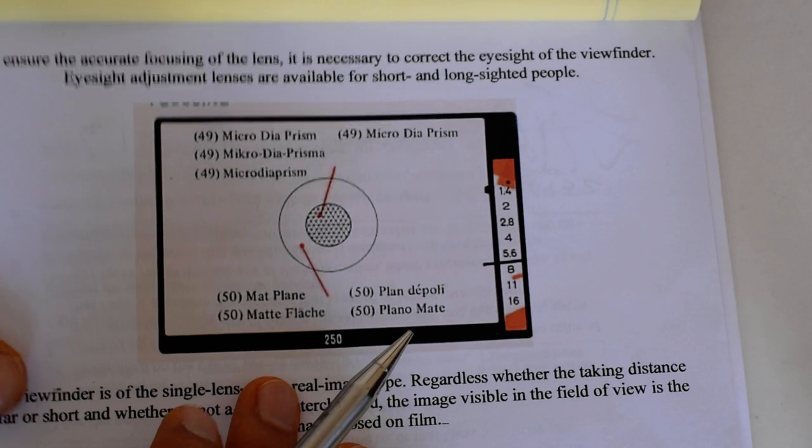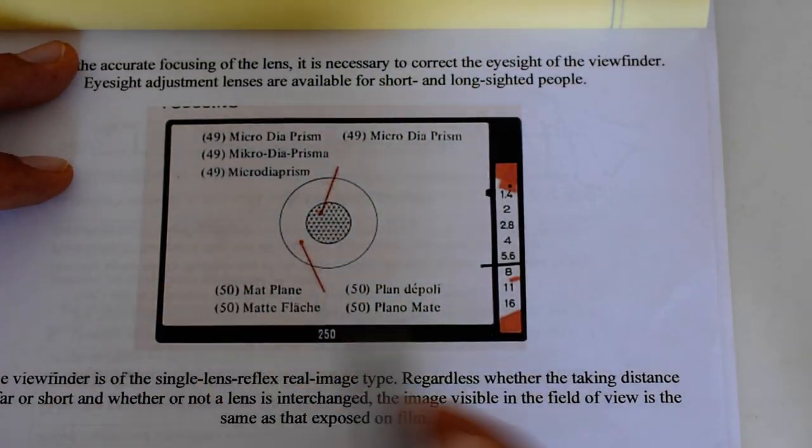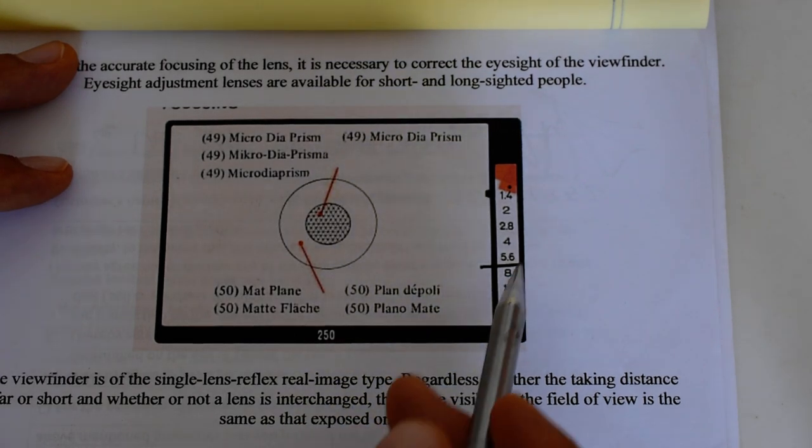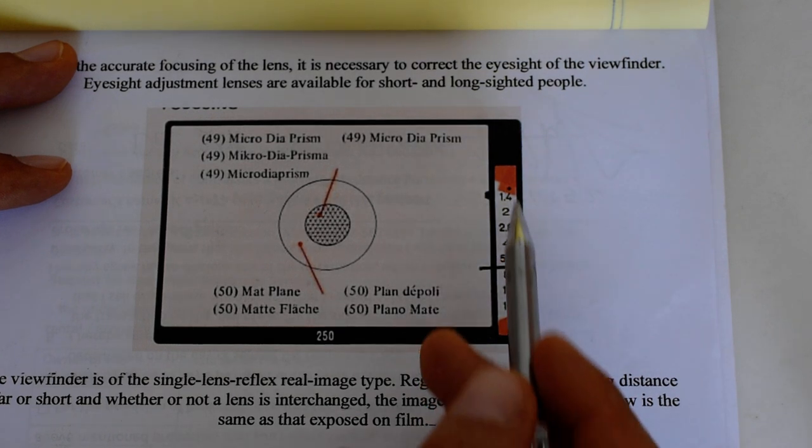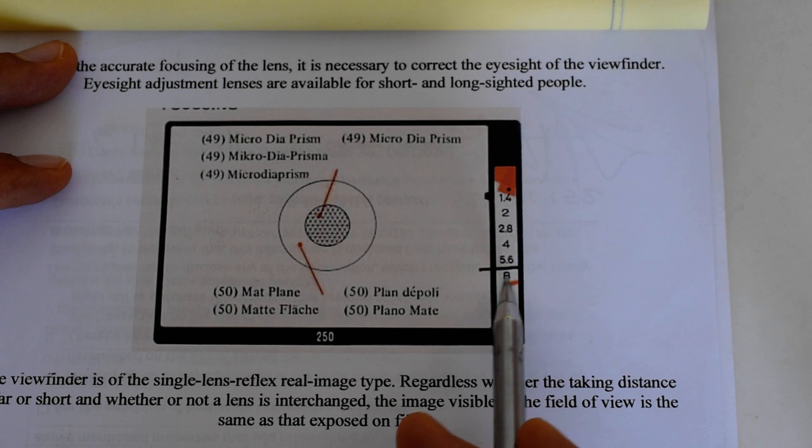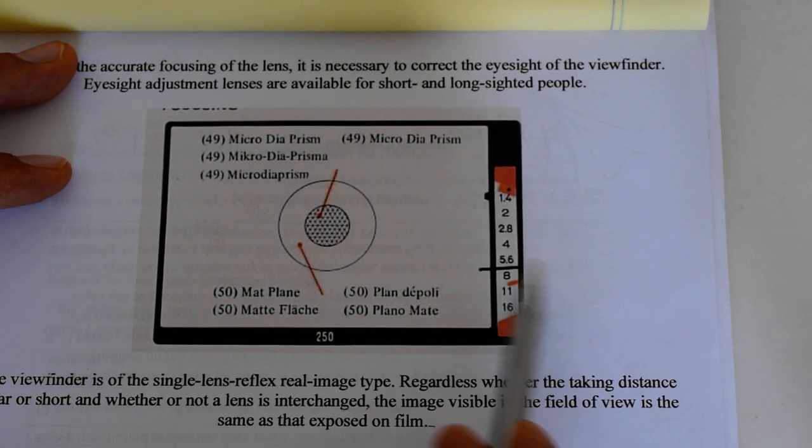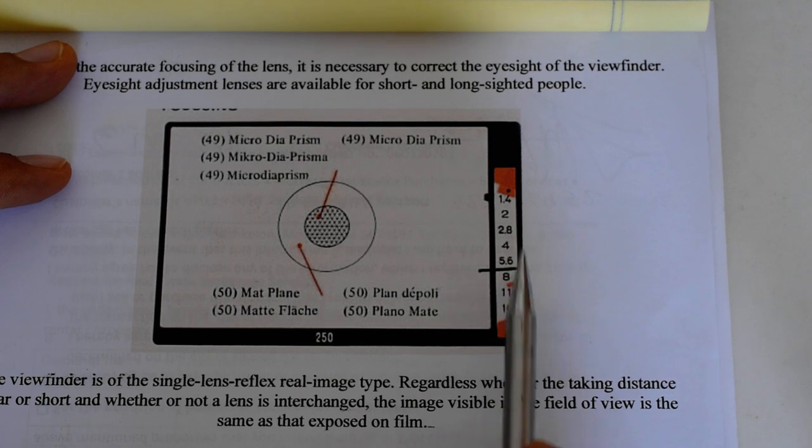Alright, so let's take a look inside the viewfinder of the Autoreflex and see what you see. So this is just a page out of the owner's manual which I printed. You've got your display on the right-hand side which shows you your apertures going from 1.4 to 16. This needle is going to move up and down, and when you press the shutter release, again some little mechanical arm behind the scenes grabs that needle and communicates that information to the lens to set the aperture.